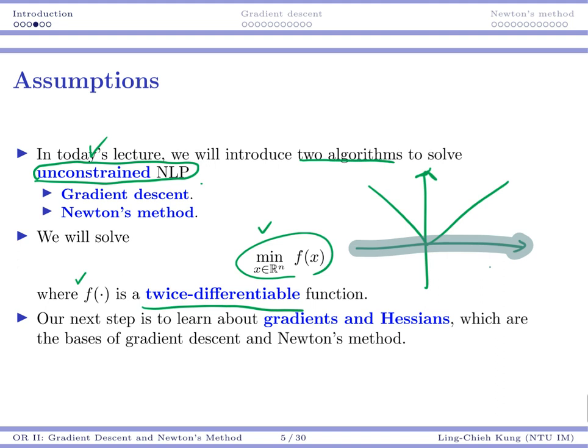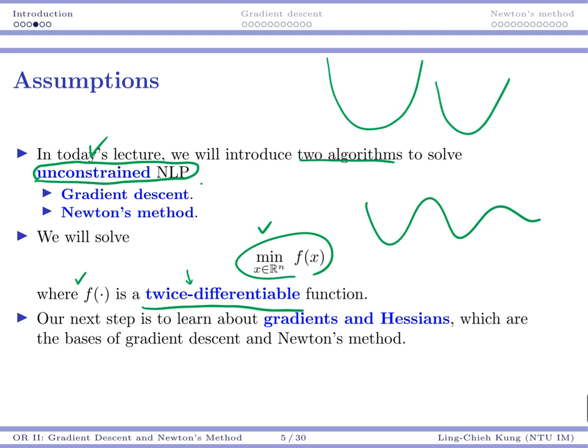We're not going to formally define what we mean by differentiable, but basically that means your functions are smooth. So at any point, you may either find the first order derivative, or you may find the second order derivative.